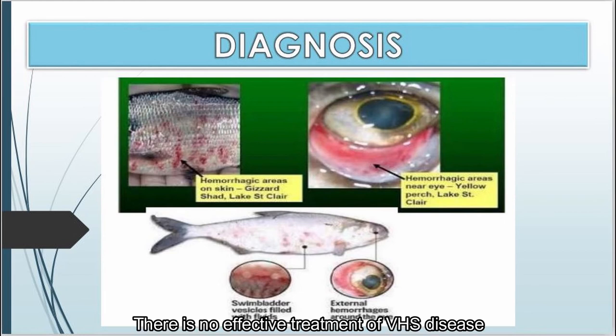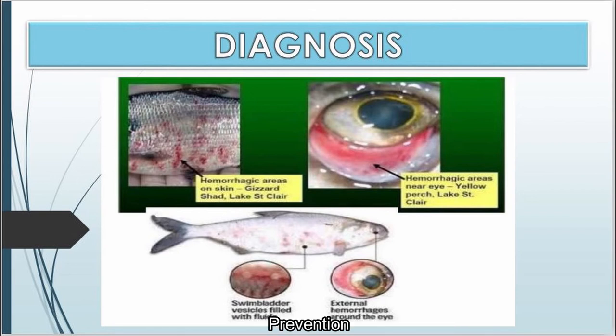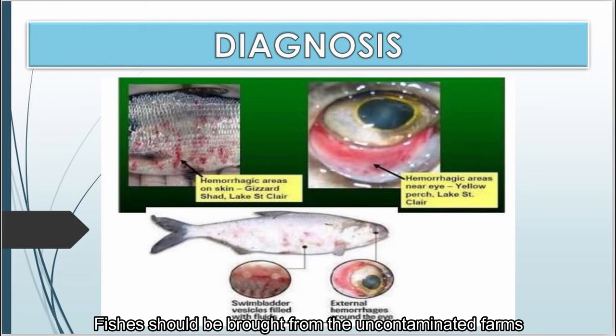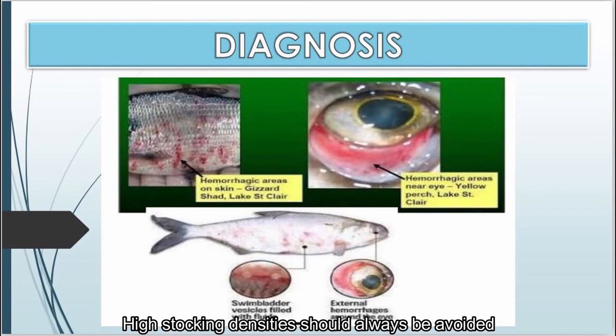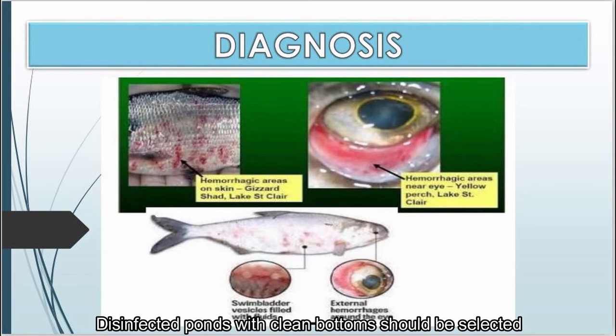There is no effective treatment for viral hemorrhagic septicemia. For prevention, fishes should be brought from uncontaminated farms. Infected or dead fishes should be immediately removed. High stocking densities should always be avoided. Disinfected ponds with clean bottoms should be selected.